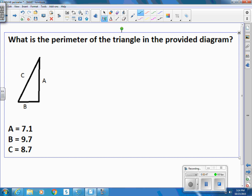What is the perimeter of the triangle in the provided diagram? So A is 7.1, B is 9.7. You can see this is not drawn to scale. C is 8.7.